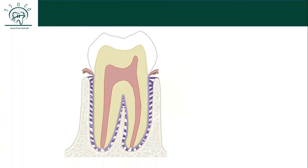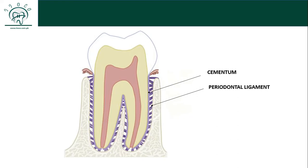Before going into the detail of the reaction, you must know the anatomical structure of teeth and periodontium. The root of all teeth is lined with cementum, in which periodontal ligament fibers are inserted. On the other hand, ligament fibers are inserted into alveolar bone proper, which is the lining of the alveolar socket and is a part of alveolar bone.